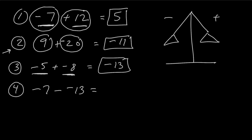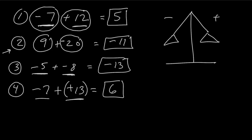For number 4, negative 7 minus negative 13 — did you get 6? Again, go back to that technique: when you see a subtraction sign, change it into an addition sign, but make that second number the opposite sign. Now it's easier — you've got 13 positives and 7 negatives, so you have more positive numbers. How many more? 6 more, so it's positive 6. Or using the walking analogy: if you walk backwards 7 steps but then walk forward 13 steps, you'd be further ahead overall.